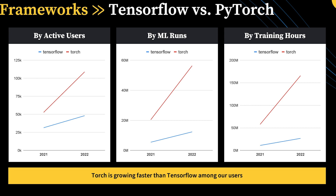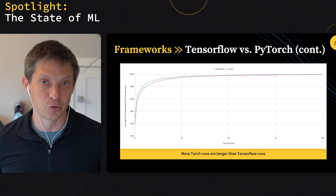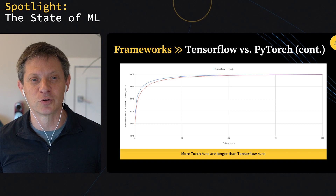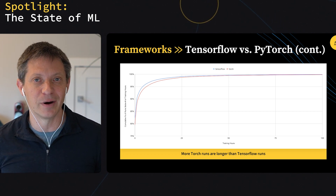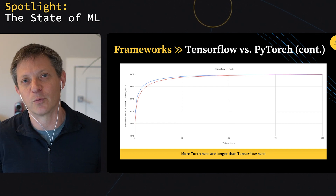Let's talk about frameworks. Starting with the two main core frameworks, TensorFlow and PyTorch: for our user base, PyTorch seems to be the preferred one and is accelerating its lead over TensorFlow. That is true when we measure this across active users, the number of ML training runs, as well as the sum of training hours. In the latter two, the acceleration seems steeper for PyTorch over TensorFlow than among active users. We did further analysis and it does seem that PyTorch users run slightly longer ML runs than TensorFlow users, which might indicate slightly larger networks, deeper runs, or more training data.